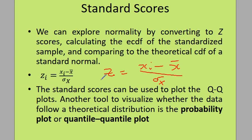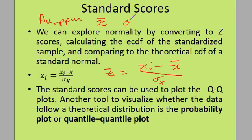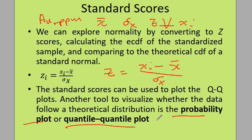You can compute the Z-scores for your variable of interest by first computing the mean and the standard deviation, and then applying the Z-score formula for all X_i. Using those Z-scores you can then visualize your probability plots — PP plots and QQ plots.